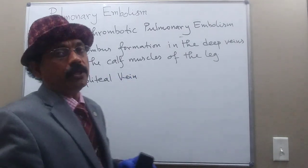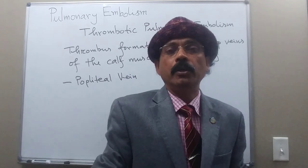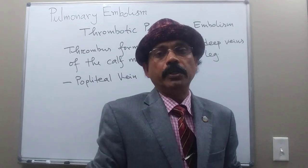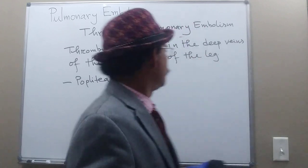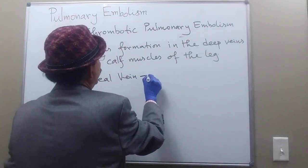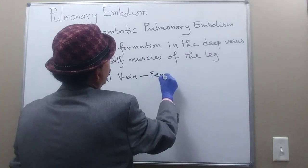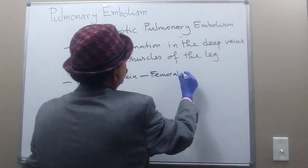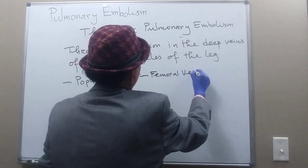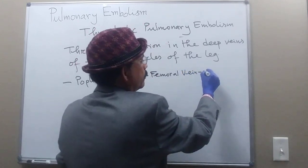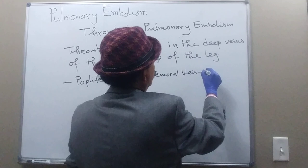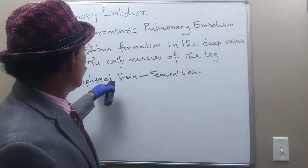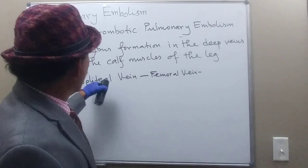The popliteal vein is present in the popliteal fossa, located behind the knee joint. From the popliteal vein, it goes to the femoral vein, where the thrombus becomes the embolus.